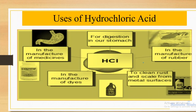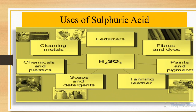Looking at this picture: HCl, hydrochloric acid, is used in the manufacture of medicines, for digestion in our stomach, in manufacturing rubber, and to clean rust and scale from metals. Sulfuric acid (H2SO4) is used in fertilizers, fibers and dyes, paints and pigments, soaps and detergents manufacturing, and as a cleaning agent for metals.